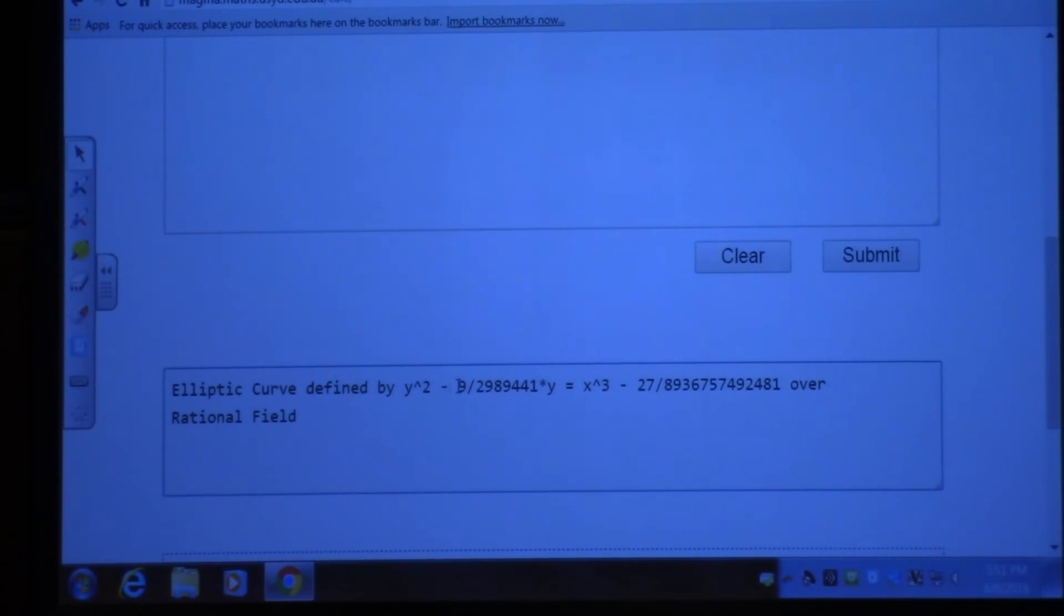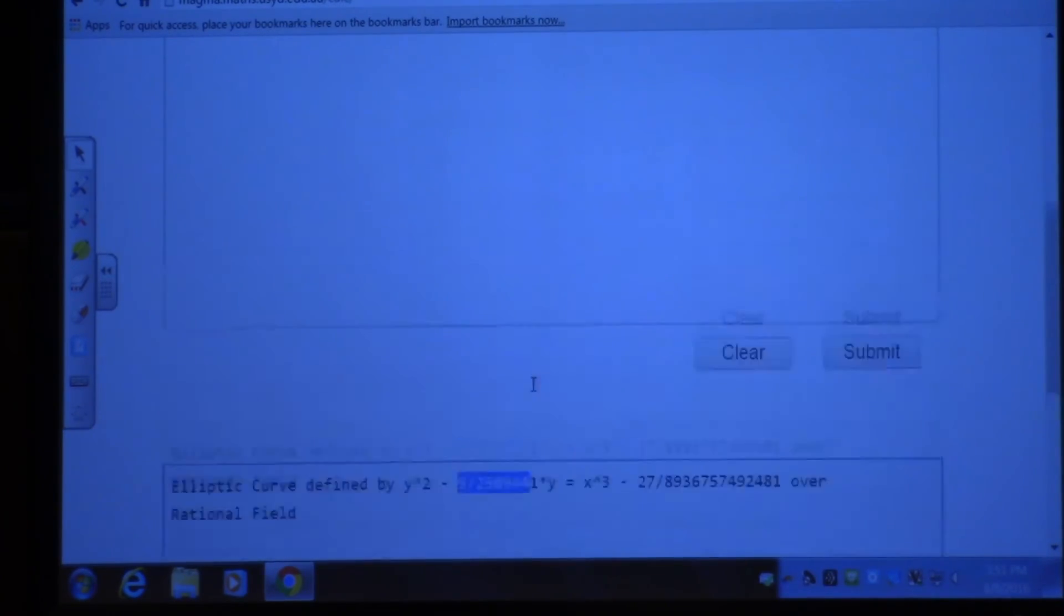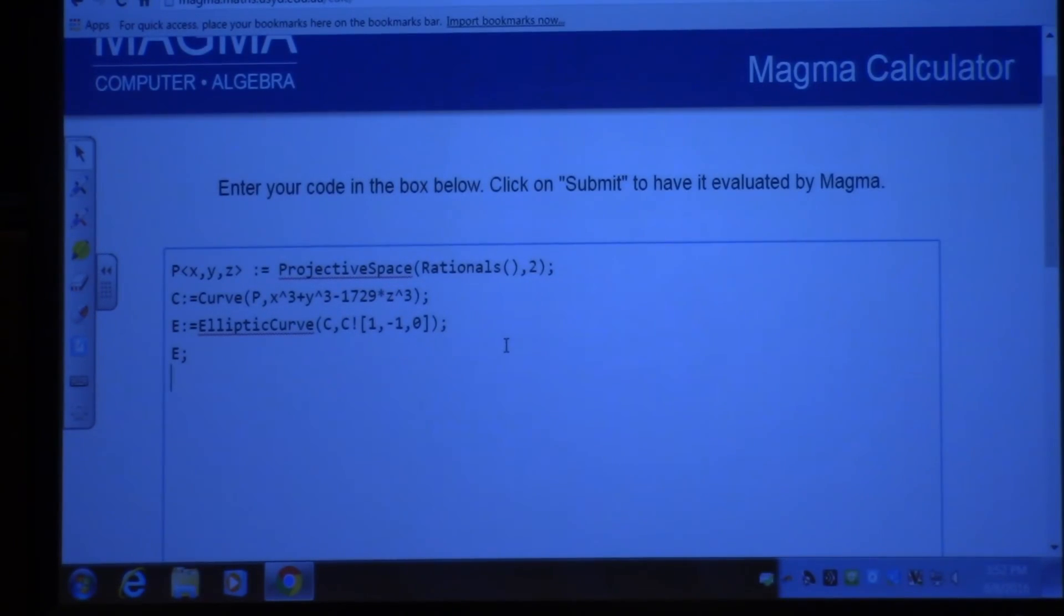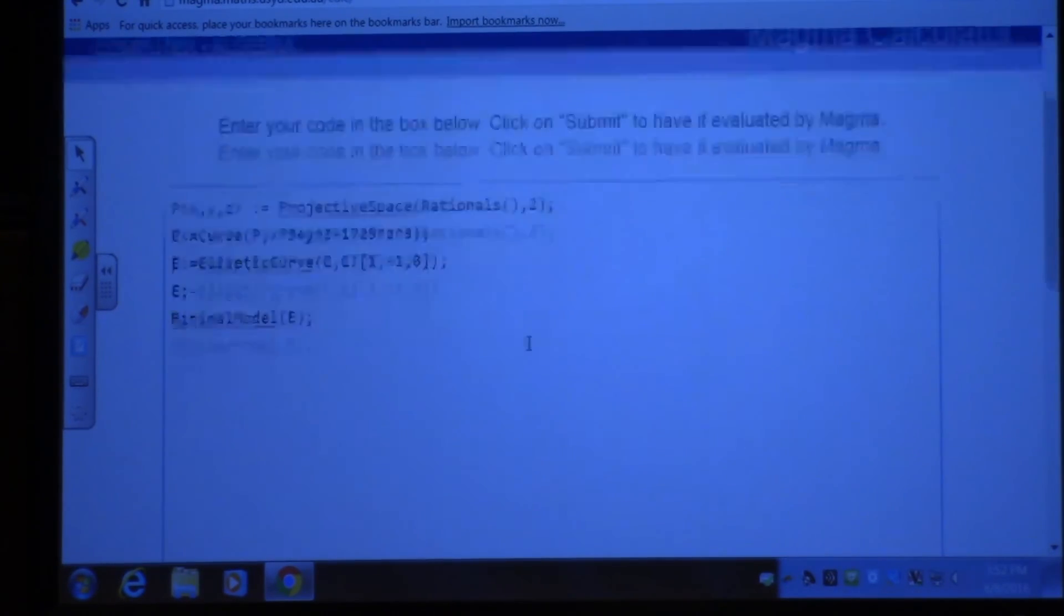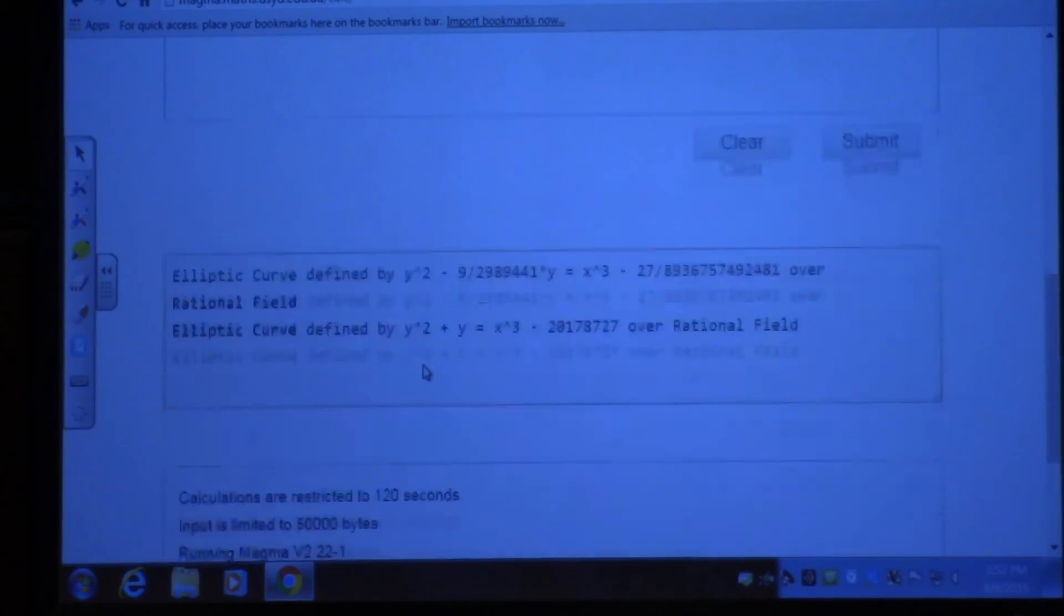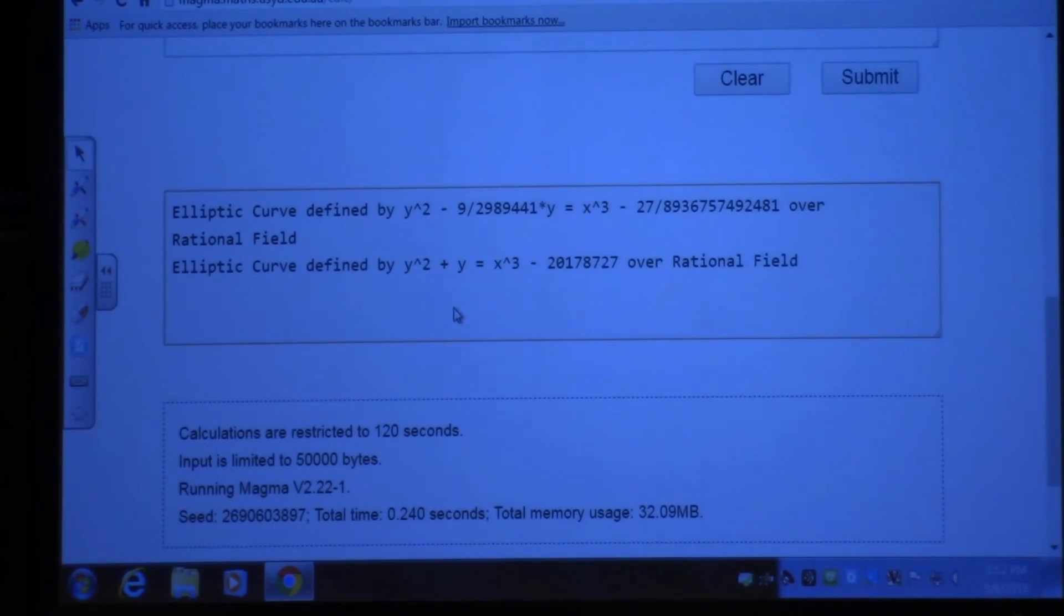The only thing is that these denominators, I don't like too much. So what I'm going to do is do a minimal model so I can find a better model that gets rid of denominators and so on. And now it gives me an elliptic curve that has this smallest coefficient that is isomorphic to the one I started with. And now I can do computations on that one.